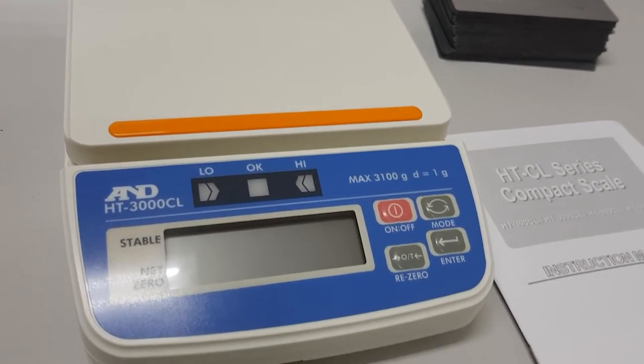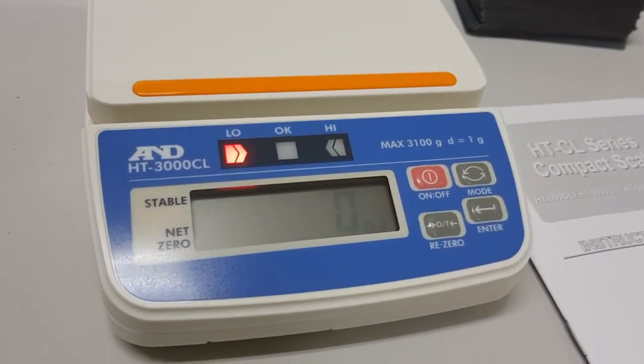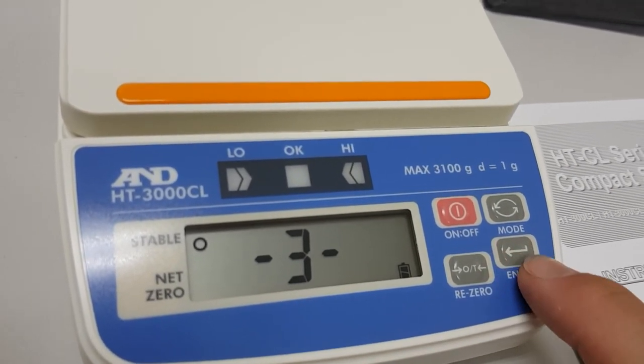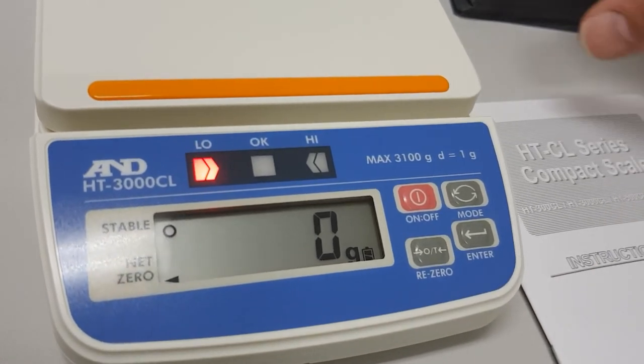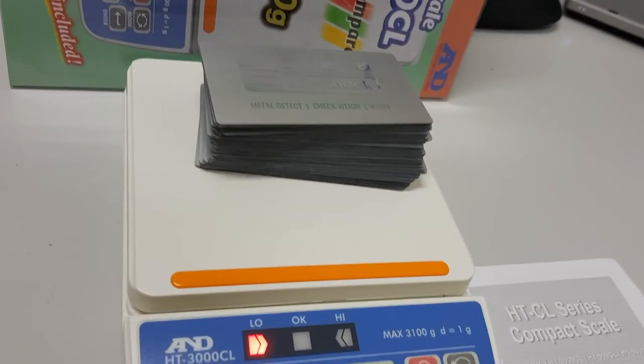Now when we turn the scale back on again, it'll come up and we can just double check if you like. The memory is the one that was last changed, which is memory number three. And now when we put on the pile of business cards which is 174 grams, that's now underweight because we set 200 to 220 as our target.